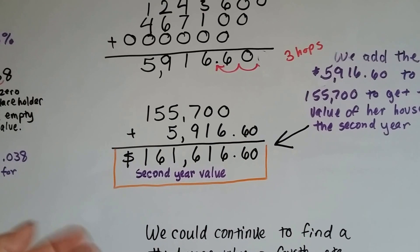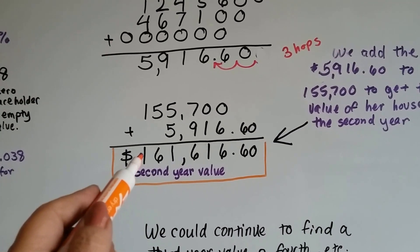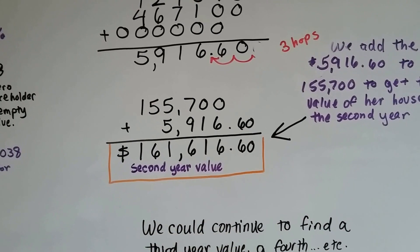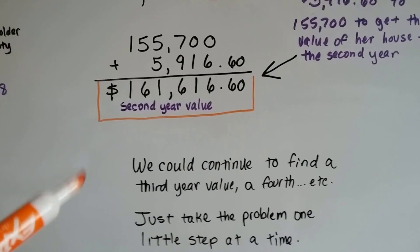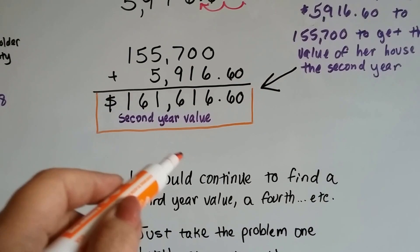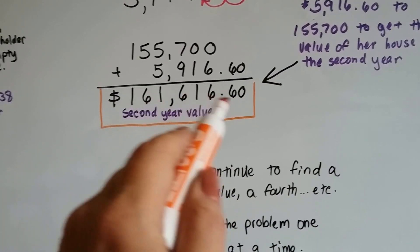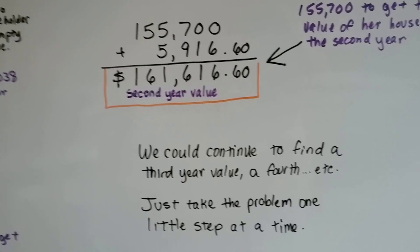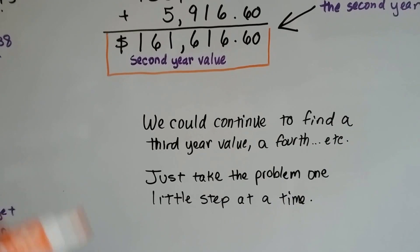Now for real estate values, they'd probably just round this off to $161,600 or something like that. But we could continue to find the third-year value, a fourth-year, if we just keep doing this and multiplying the new value by the 0.038, if that's what the percentage increase is staying at.